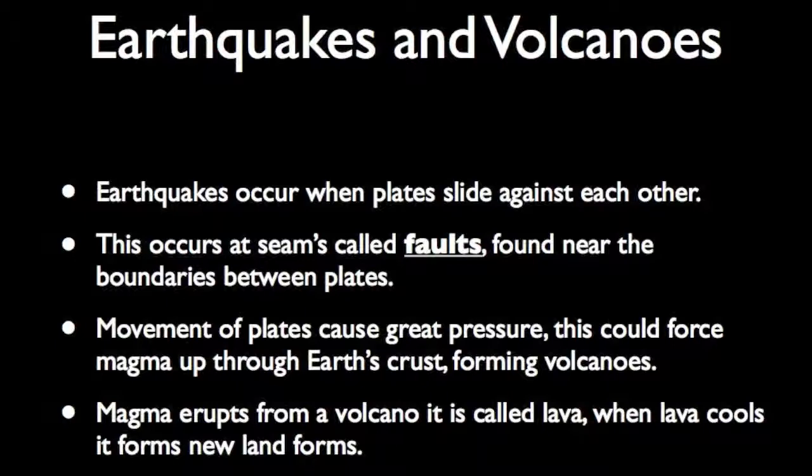The movement of continental plates creates great pressure inside Earth. Sometimes this pressure forces magma up through Earth's crust, forming volcanoes. Volcanoes spew magma from inside Earth. When magma erupts out of a volcano, it is called lava. Ash, rocks, and poisonous gases also explode out of volcanoes during an eruption. But volcanoes also serve an important purpose — when lava cools, new land forms. Undersea volcanoes even grow into islands after thousands of years of eruption.